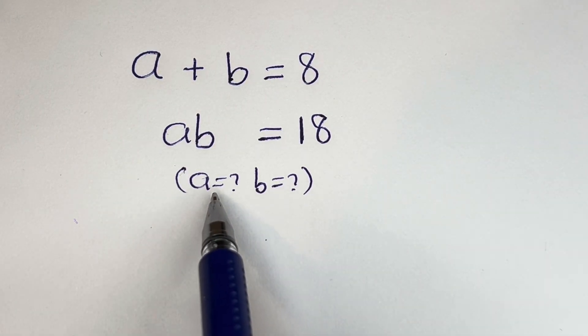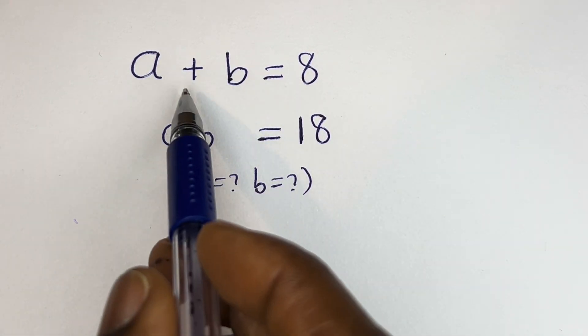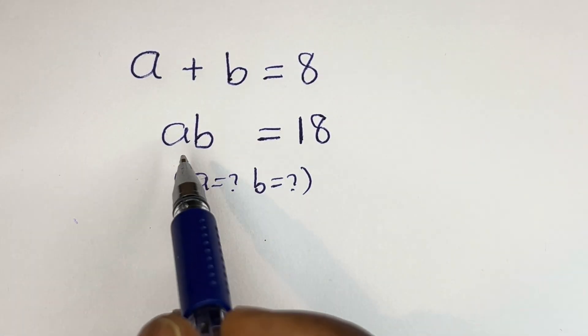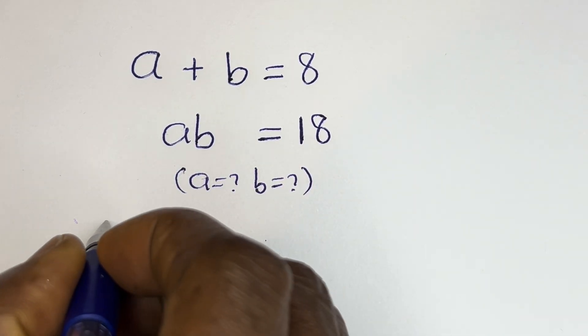Hello. How to solve for a and b in this equation: a plus b is equal to 8, and ab is equal to 18. Solution.